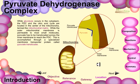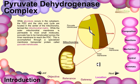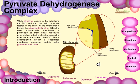While glycolysis occurs in the cytoplasm, the PDC and the citric acid cycle are located in the center of the mitochondria, termed the mitochondrial matrix. While the outer membrane of the mitochondria is permeable to most small molecules, pyruvate must be translocated across the inner membrane to reach the PDC. This is accomplished through a specialized membrane transport protein called the pyruvate translocase.